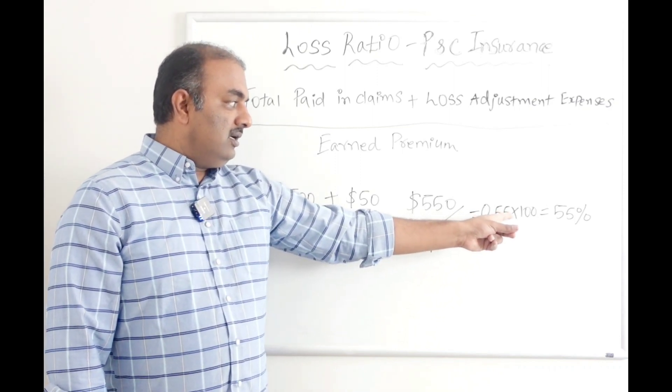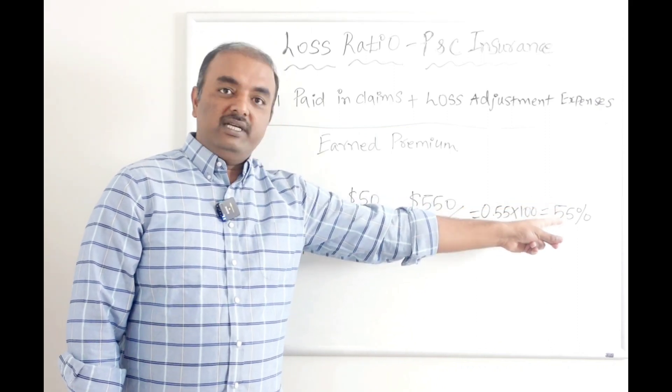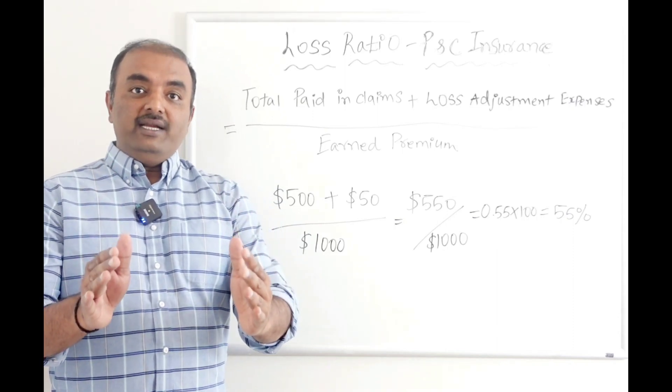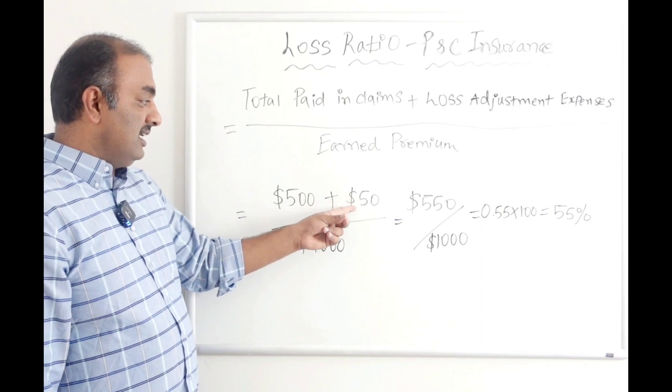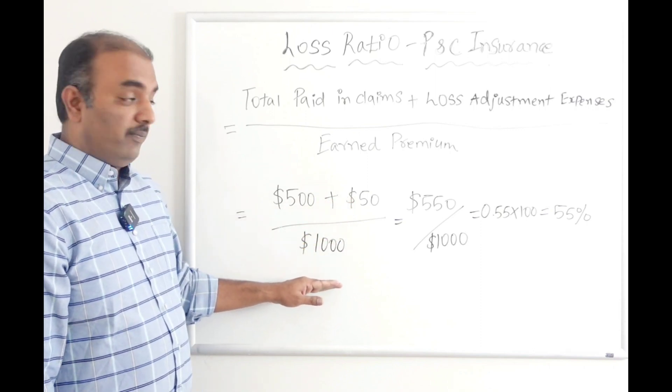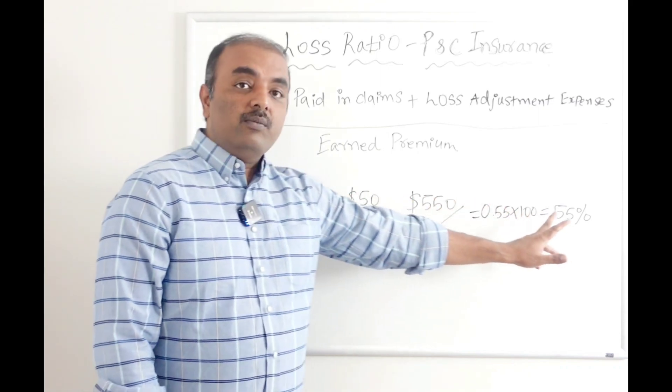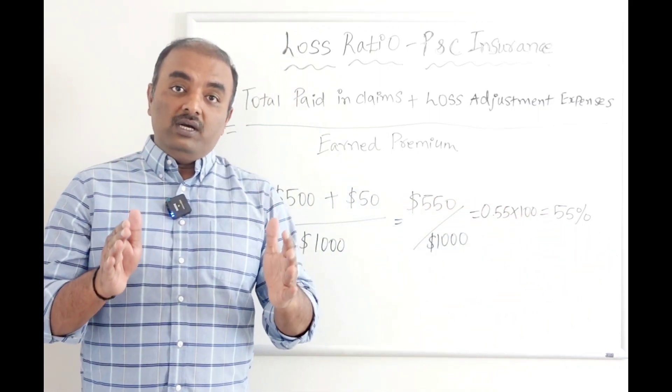And then it comes to 0.55 into 100, so your loss ratio is 55 percent, which means your insurance company is profitable, right? Because the total amount that you are paying in claims plus any additional expenses is less than the earned premium. If this calculation results in more than 100 percent, which means your insurance is not financially strong.